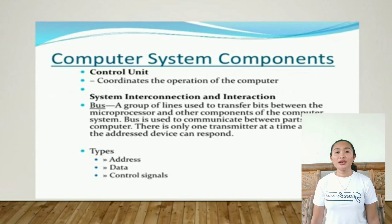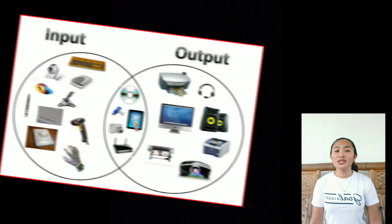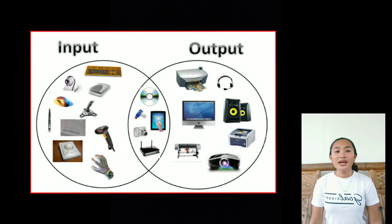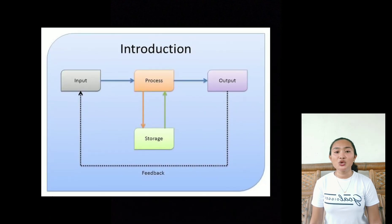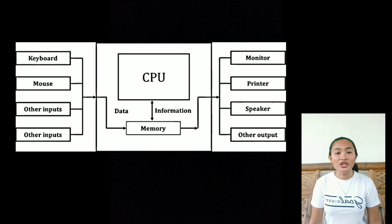Input and output: The input helps users enter data and commands into a computer system. Data can be in the form of numbers, words, actions, commands, etc. The main function of input devices is to direct commands and data into computers. After processing of data, it is converted into a format which humans can understand. After conversion, the output unit displays this data to users.